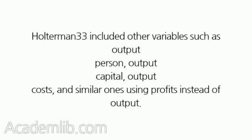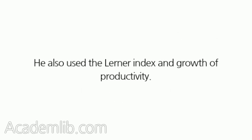Holterman included other variables such as output per person, output per capital, output per costs, and similar ones using profits instead of output. He also used the Lerner Index and growth of productivity.